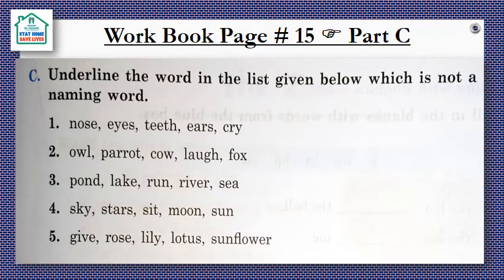Number two: owl, parrot, cow, fox — these are all naming words, they are all animals. The one different word is laugh. Laugh is an action word, so we will underline laugh.